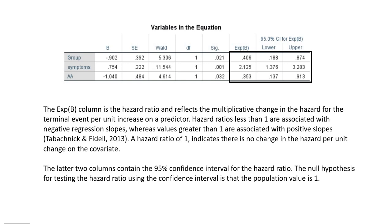The EXP(B) column in the SPSS output is a hazard ratio and reflects the multiplicative change in the hazard for the terminal event per unit increase on a predictor. Hazard ratios less than 1 are associated with negative regression slopes, whereas values greater than 1 are associated with positive slopes. A hazard ratio of 1 indicates no change in the hazard per unit change on the covariate.